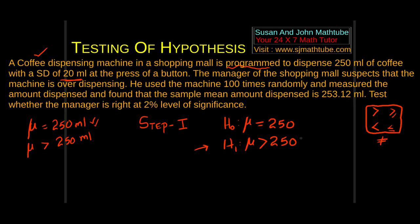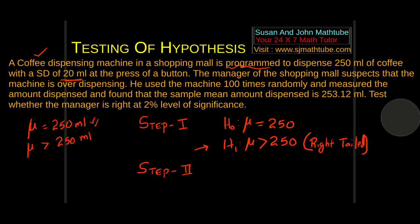In particular, if you see greater than, we write right-tailed. One important thing: if you have a two-tailed test — that is, not equal to — in step number 2 we will always use alpha by 2. Remember: if you have a two-tailed test, use alpha by 2. This is not a two-tailed test — this is a single-tailed, right-tailed test.